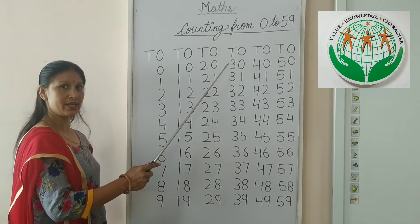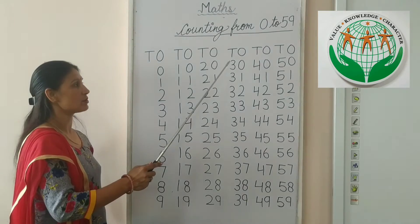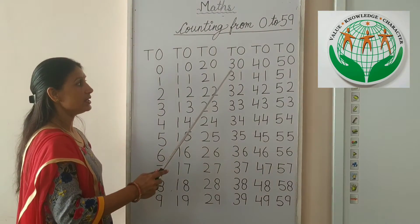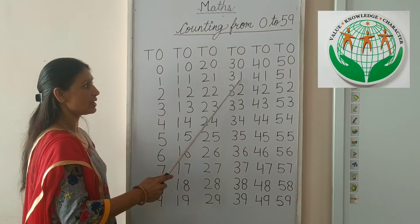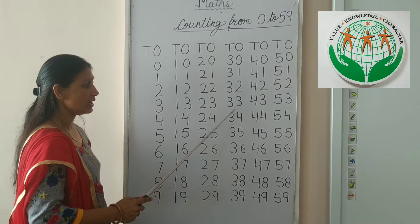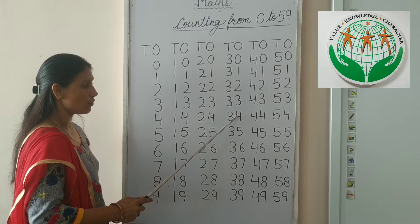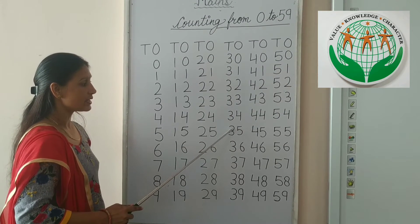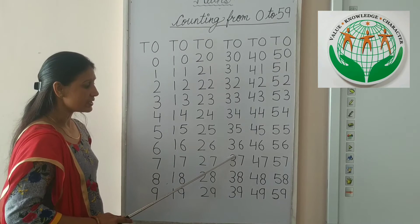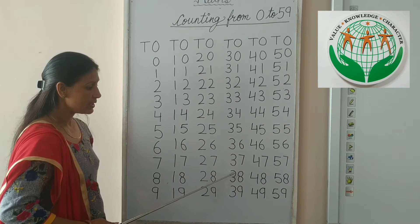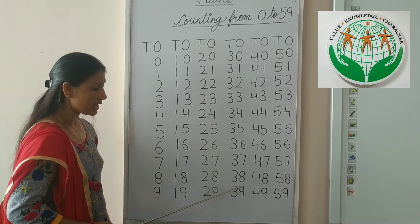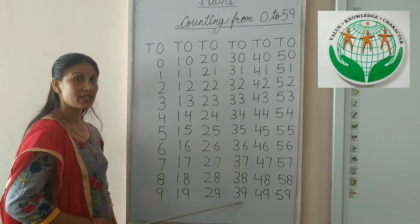30. Yes, after 29 comes 30. 30, 31, 32, 33, 34, 35, 36, 37, 38, 39. And kids, come to the next line.